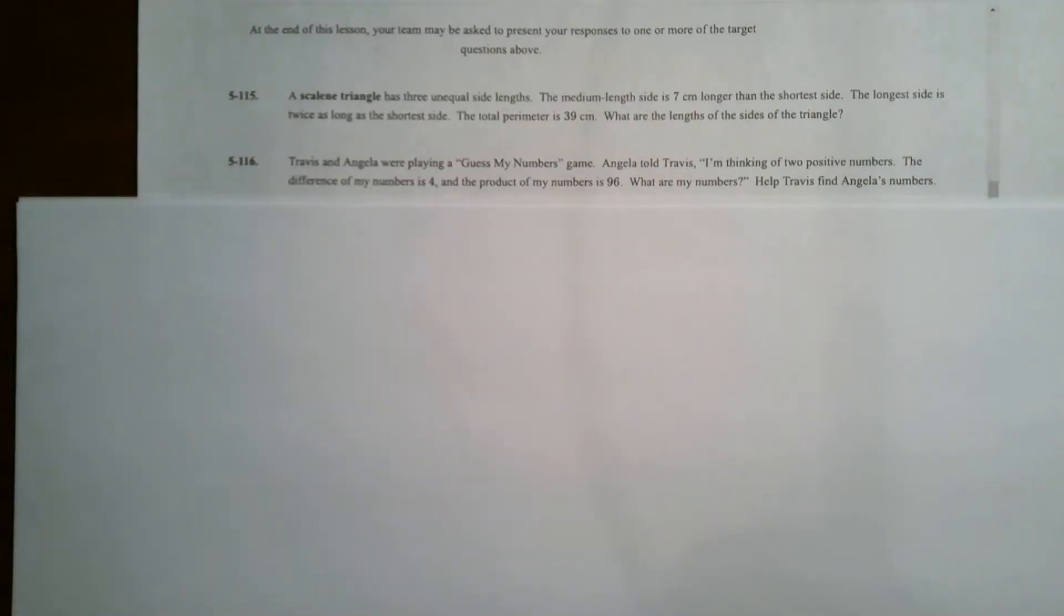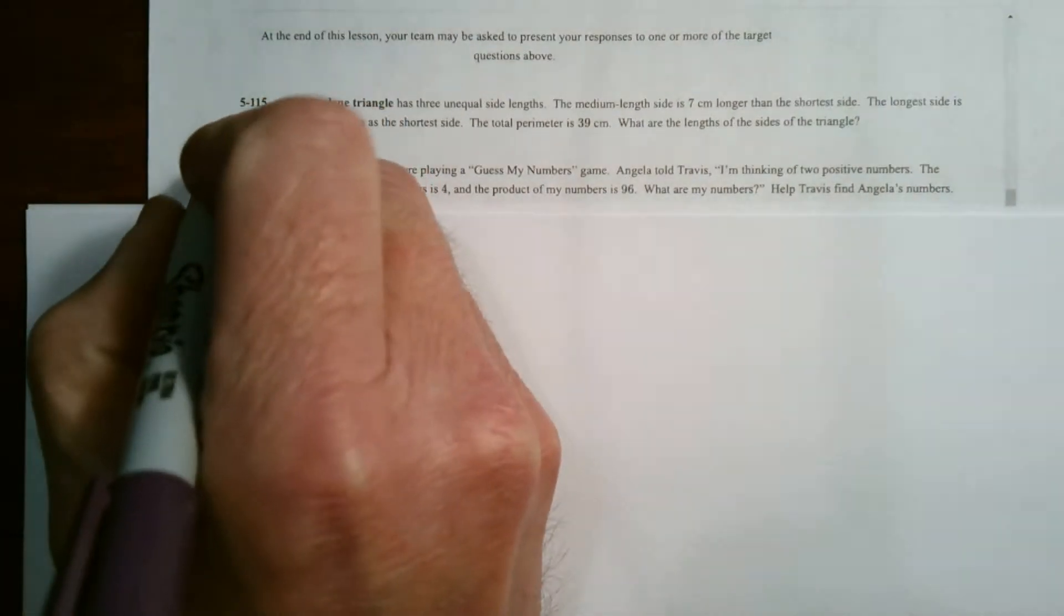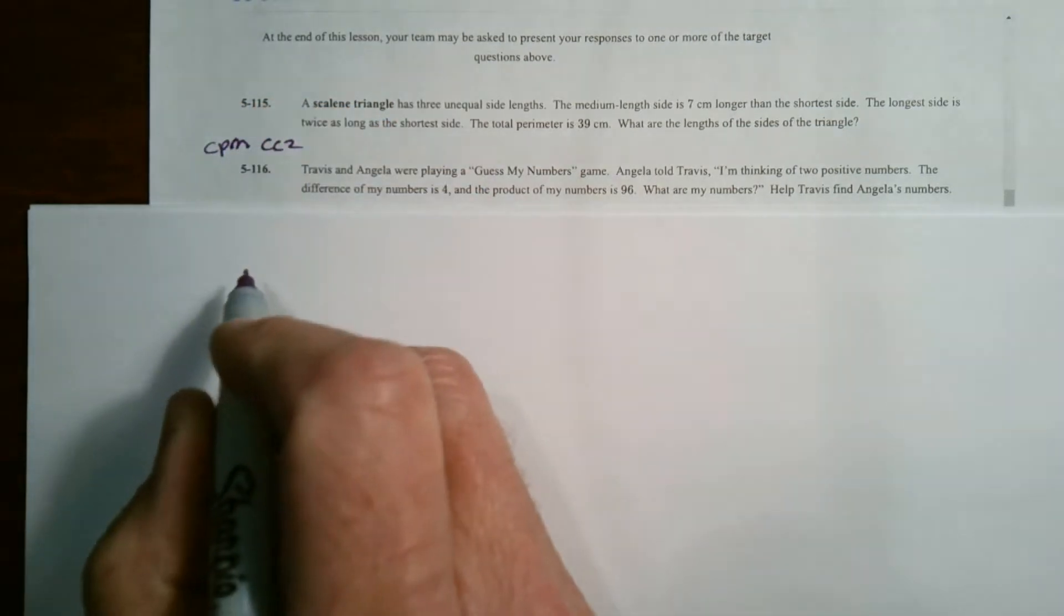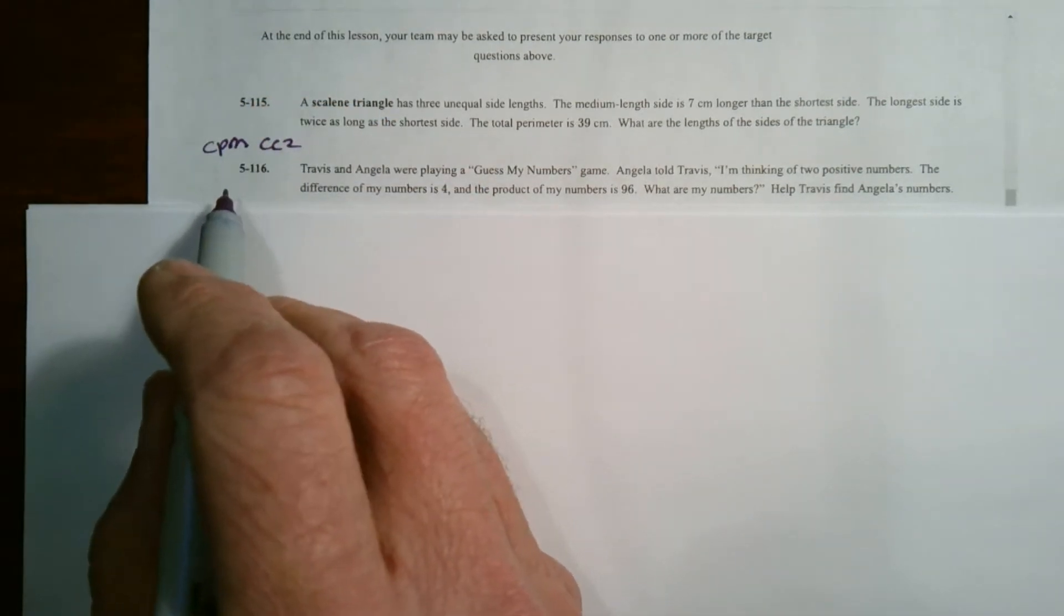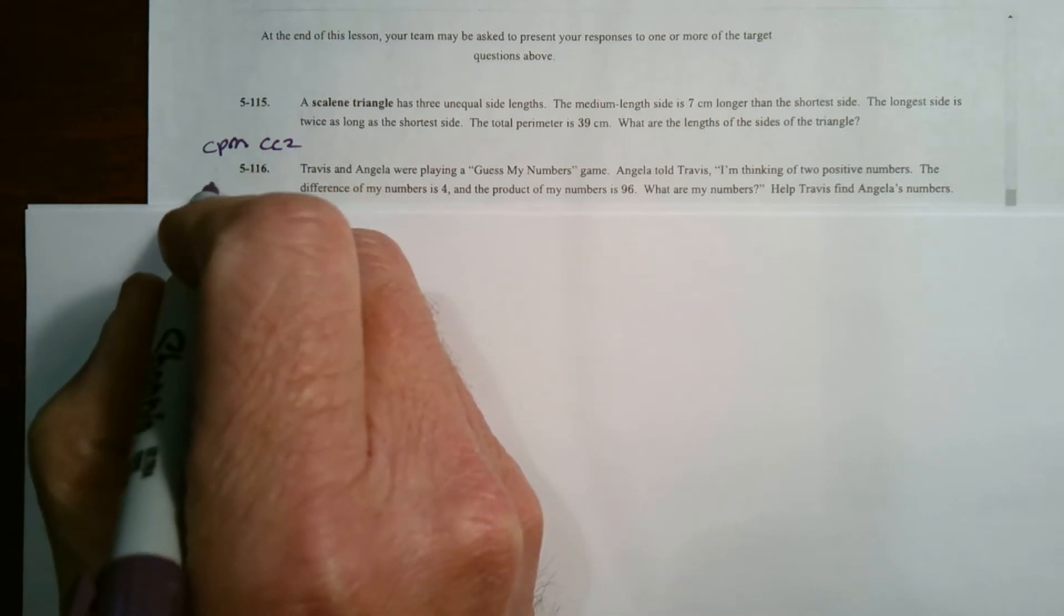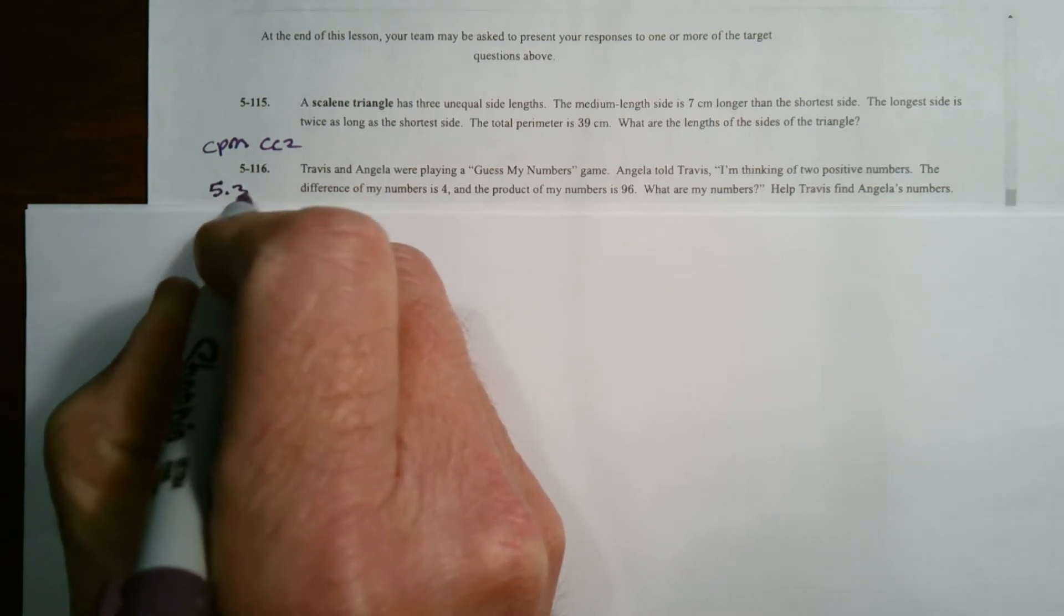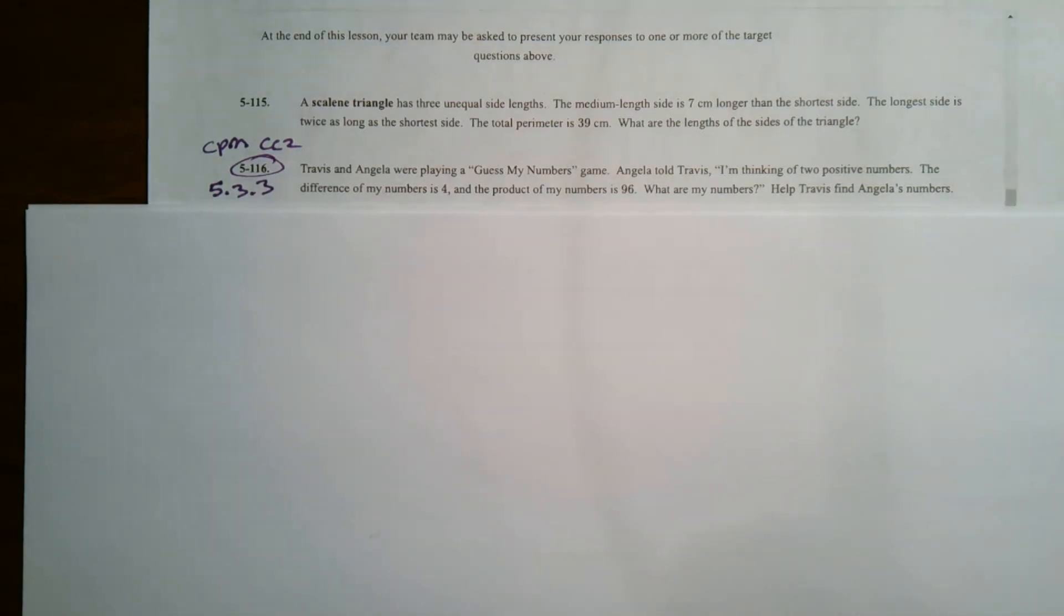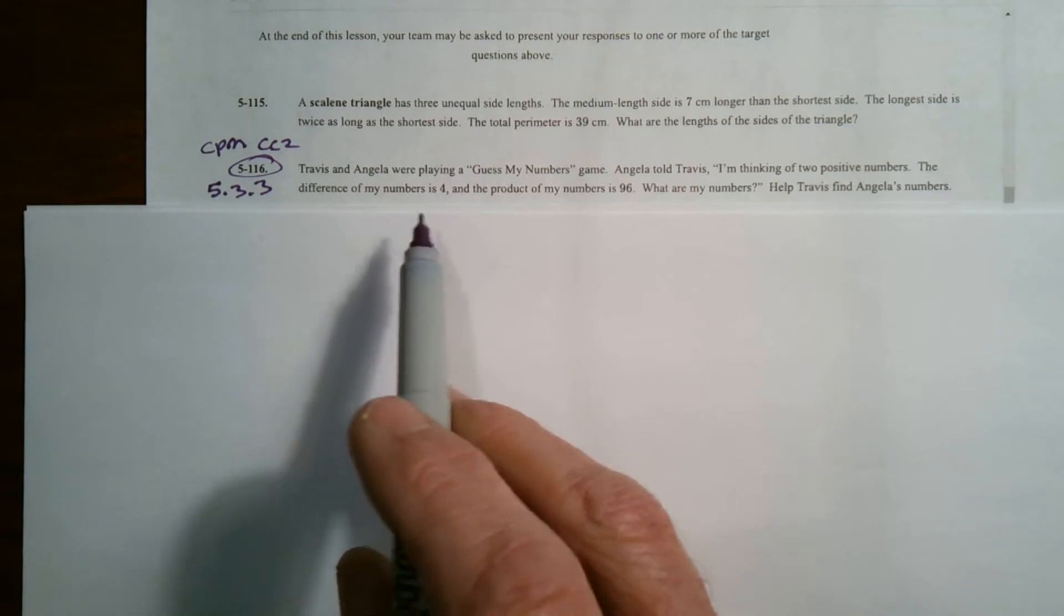We are looking at a word problem and we're going to use a 5D process for solving, also known as the guess and check process. So this is actually from CPM course 2 and it's a classwork question from section 5.3.3, number 5-116.